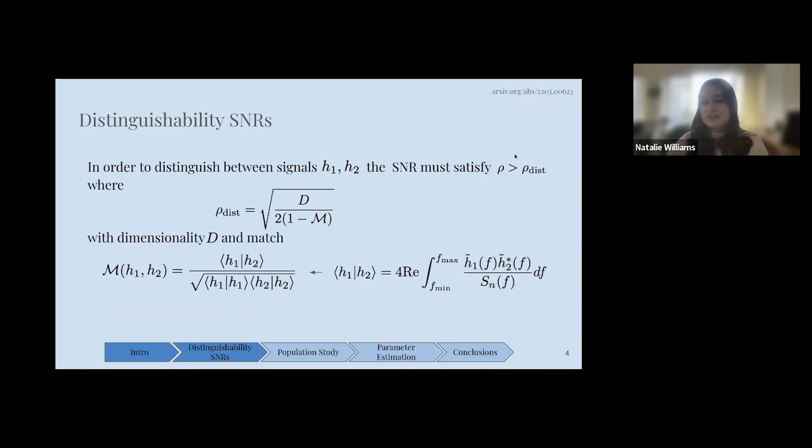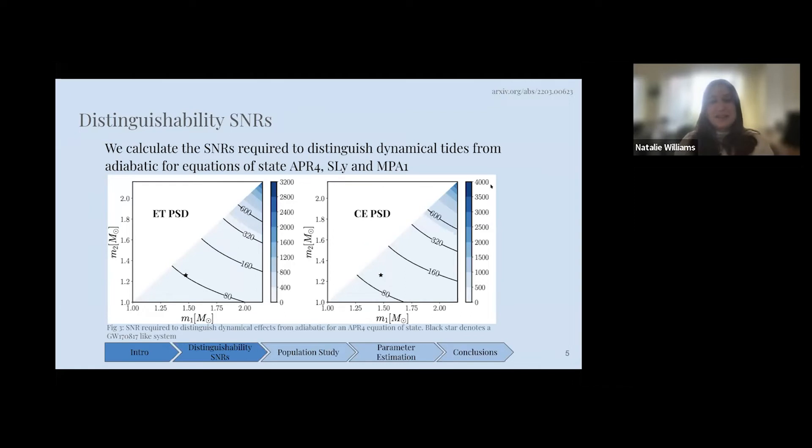We make a distinguishability criterion here. We follow Lindblom and use two signals to find the SNRs that we require to be able to distinguish the adiabatic and the dynamical, and really measure these dynamical effects. We have H1 and H2 as our two signals, one of which contains just the adiabatic effects, and the other contains the adiabatic and the dynamical effects. We calculate this using a match and a noise weighted inner product.